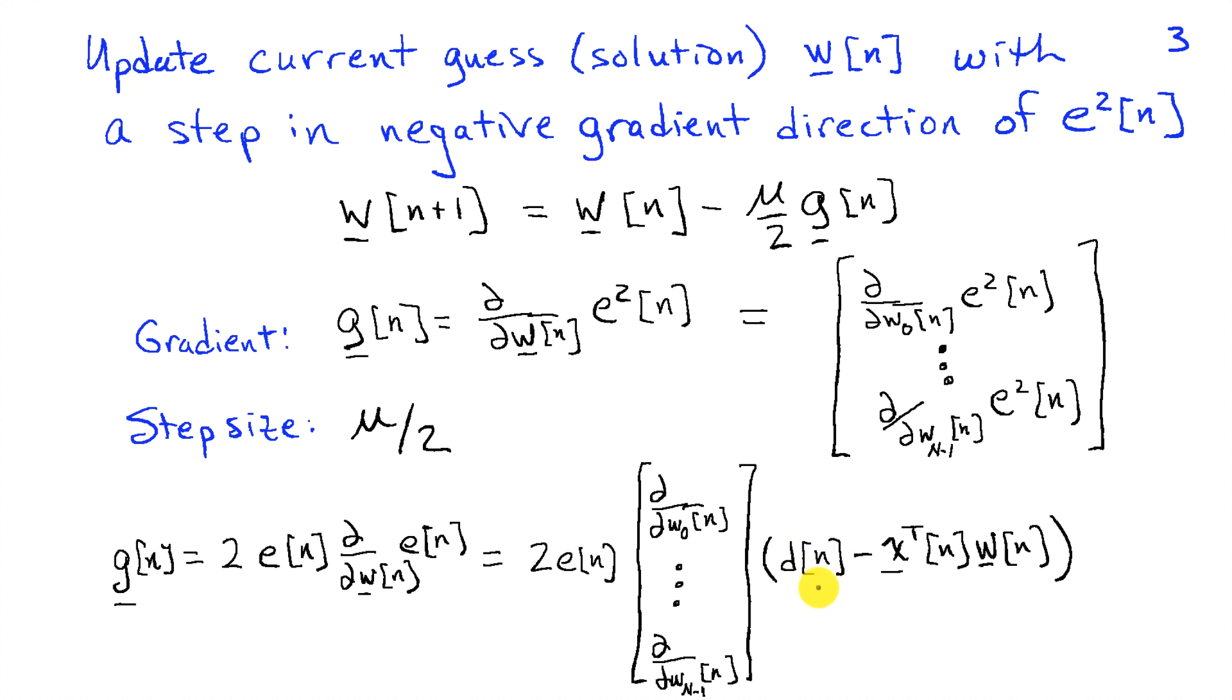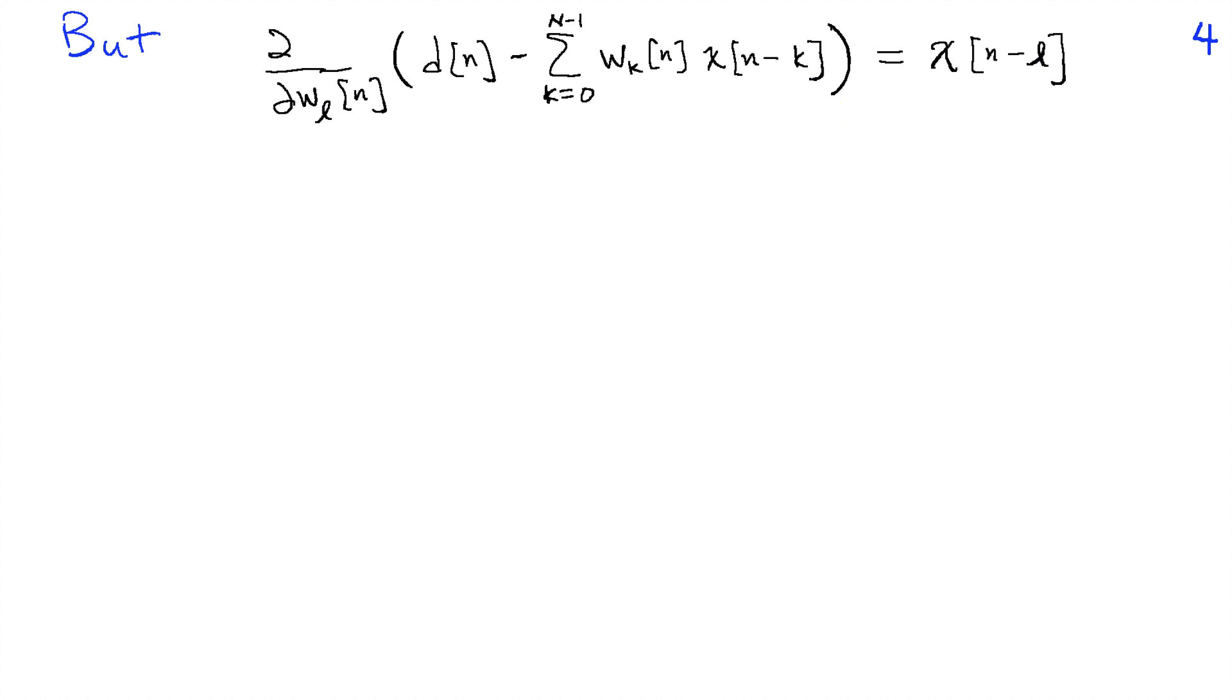We'll substitute in our definition for this vector gradient, and we see that we're taking the derivative with respect to each component of w of d of n minus x transpose of n times w of n. Well, d of n doesn't involve w, so that's going to drop out, and we're simply going to be left with taking the derivative of this inner product with respect to each element of the vector w. We can expand the inner product and find that when we differentiate with respect to the L element, we just pick out x of n minus L, so that's a particular element of the vector x.